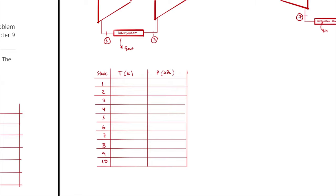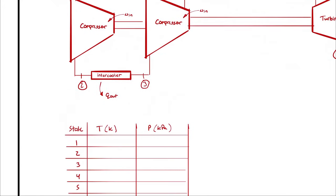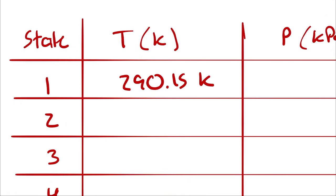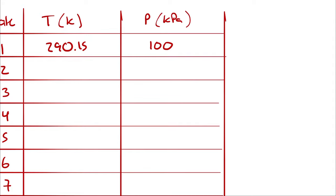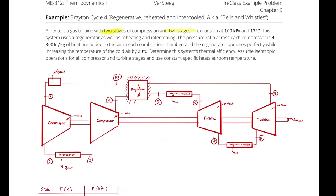All I know so far is the temperature at state 1: 17°C + 273.15 = T1 = 290.15 K. The pressure at state 1 is 100 kPa. I also know enough to determine all pressures, because the pressure ratio across each compressor is 4, so P2/P1 = 4 and P3/P4 = 4. All heat exchange processes in the Brayton cycle are isobaric, so P2 = P3, P4 = P5 = P6, P7 = P8, and P9 = P10 = P1 = 100 kPa.